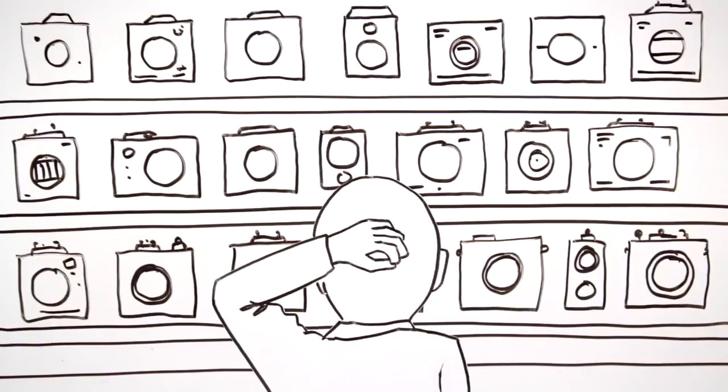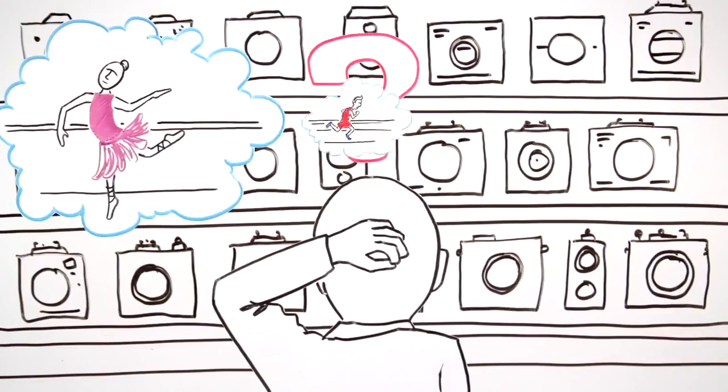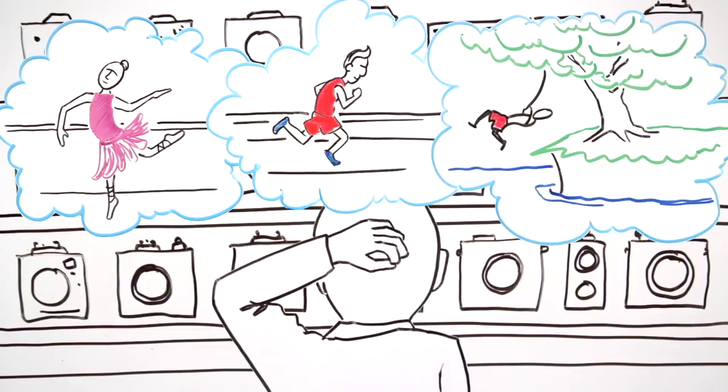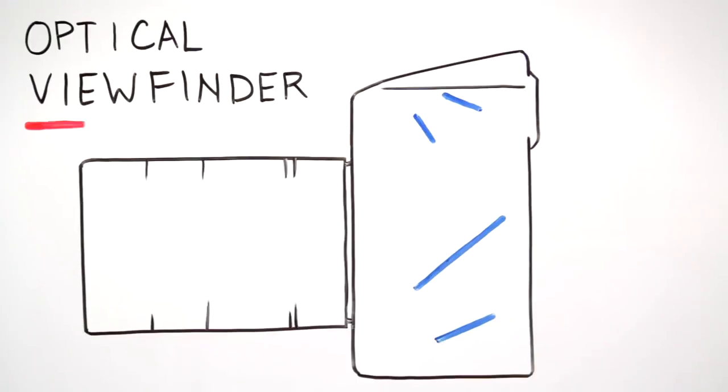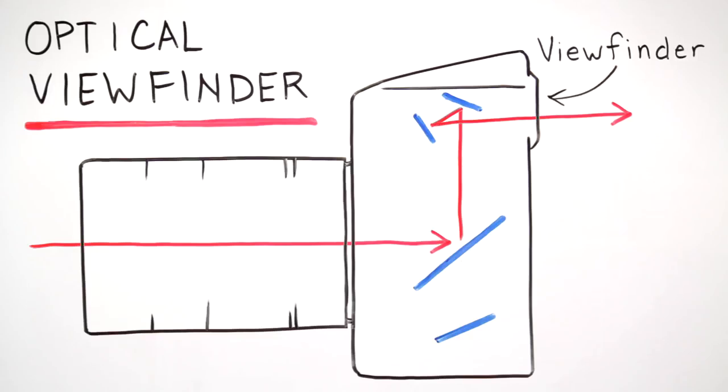Understanding the advantages of each technology helps you find the perfect fit for different scenarios. With an optical viewfinder system, the camera uses a mirror to reflect light to your eye and also to a dedicated autofocus sensor.